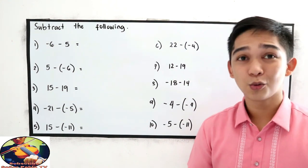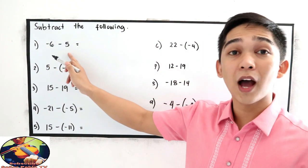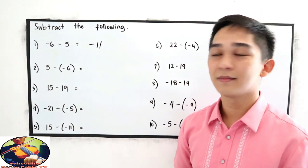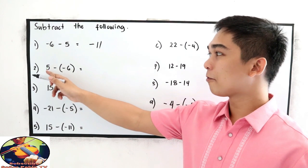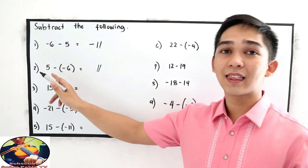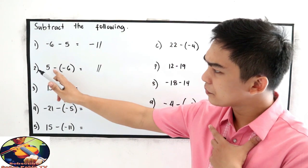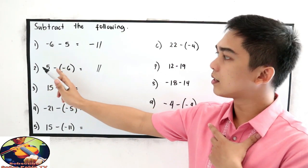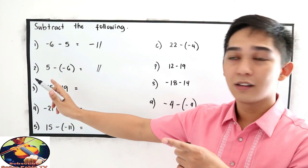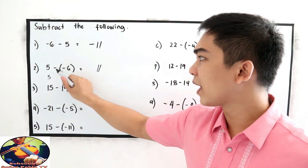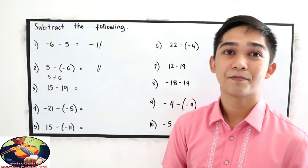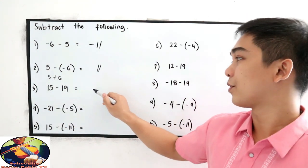Now let's answer numbers 1 to 10. Number 1 — negative 6 minus 5 — is negative 11. Number 2 — 5 minus negative 6 — is 11. A shortcut in subtraction: if the two consecutive signs are both negative, you can use the multiplication technique — negative times negative is positive, so 5 plus 6 is positive 11. Number 3 — 15 minus 19 — is negative 4.